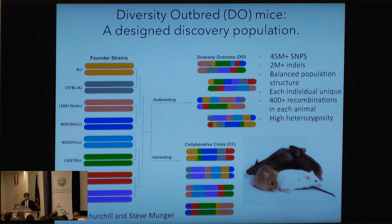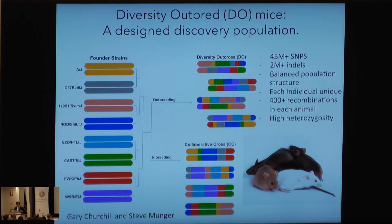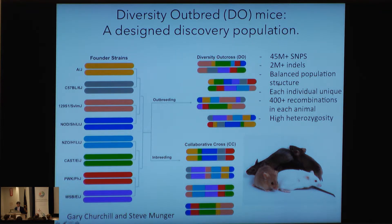One of the things we do at the Jackson Labs is generate new model systems for testing a variety of approaches. One of them is using diversity strains, where we take eight founder mice and using very controlled mating procedures develop, in one case, collaborative crosses — jumbled DNAs that become inbred species with very specific rearrangements. The second is diversity outcross, where we can almost outbreed these eight founder mice so that every mouse in a litter is completely different. In this framework, the entire diversity spans about 45 million SNPs, 2 million indels, and the variance is perhaps more than the difference between the Neanderthal and the human.